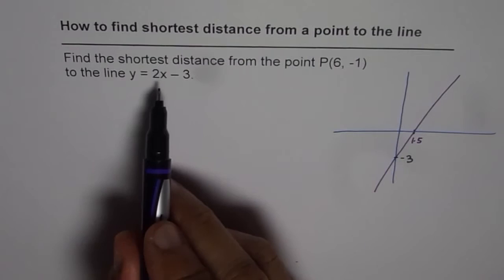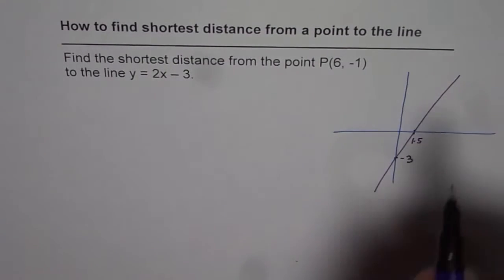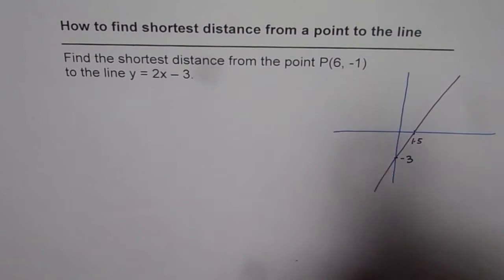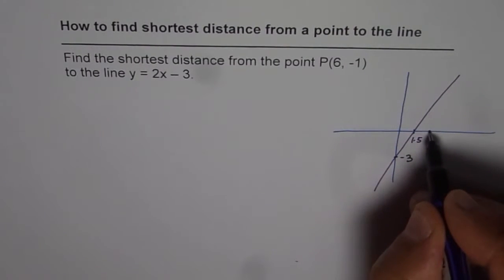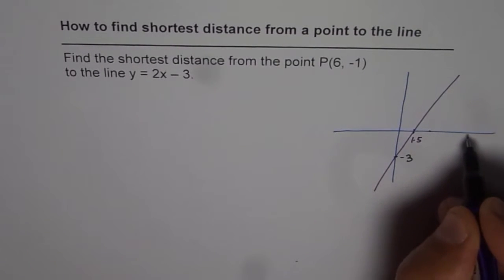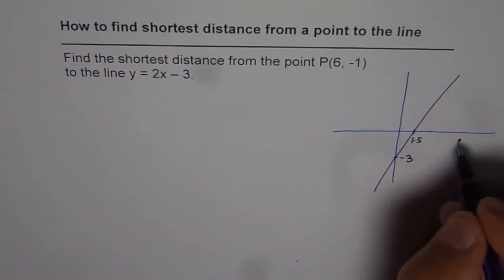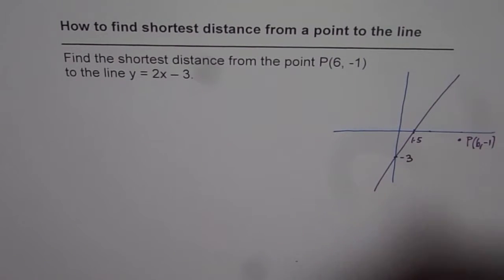If y is 0, the x-intercept will be at 1.5. We are looking for a point at (6, –1), so this is kind of 3 approximately, then approximately 6, and –1 will be around here. So let us say this is our point P, which is (6, –1).